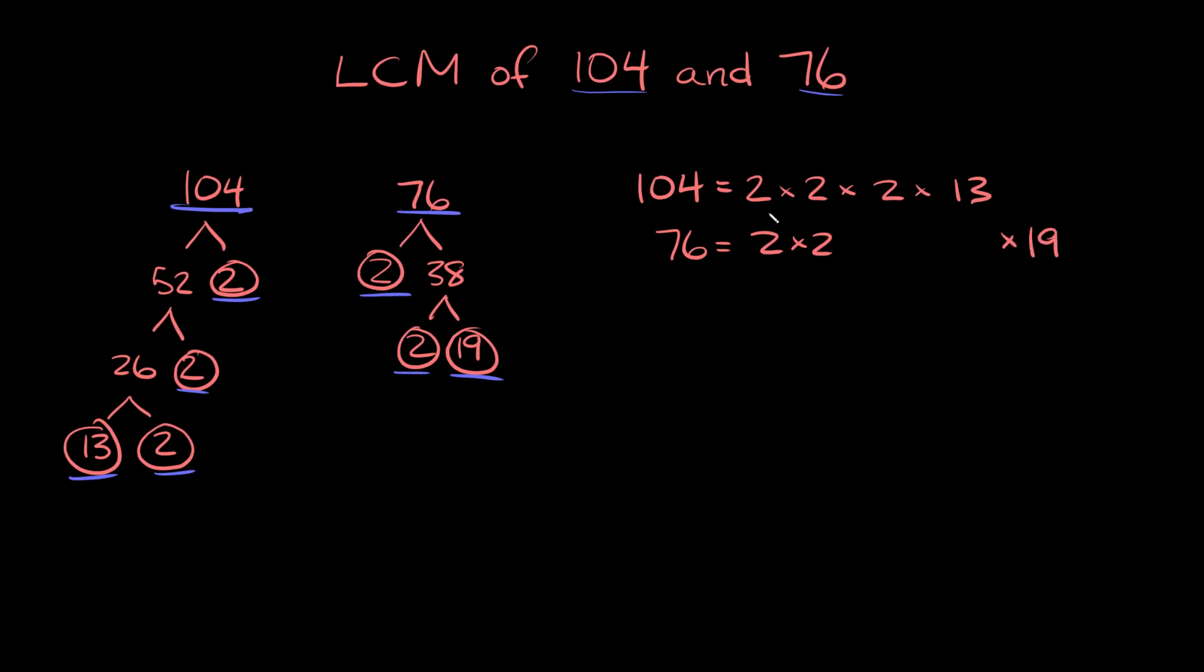And the reason I'm doing that is because I want to line up the same numbers vertically. So that's why I put a 2 here, because I had a 2 up here. That's why I put a 2 here because I had a 2 up here. And then there's no 19s up top, so I'm just going to put 19 by itself out here.